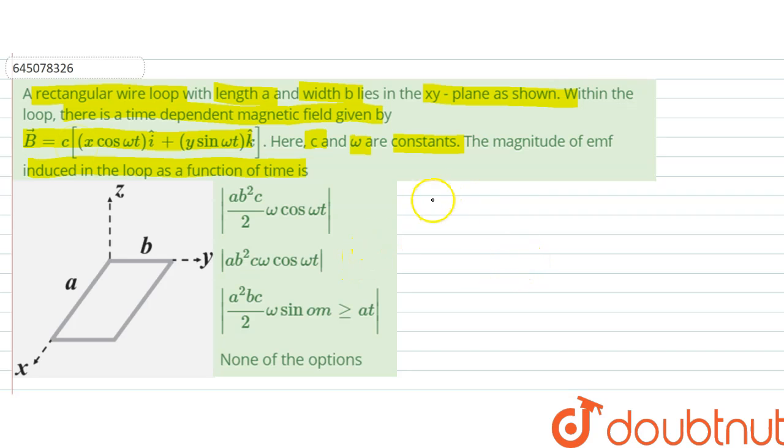So, first of all, we will find the area vector. Area vector would be along z axis. So it would be AB. The area magnitude is AB along K.